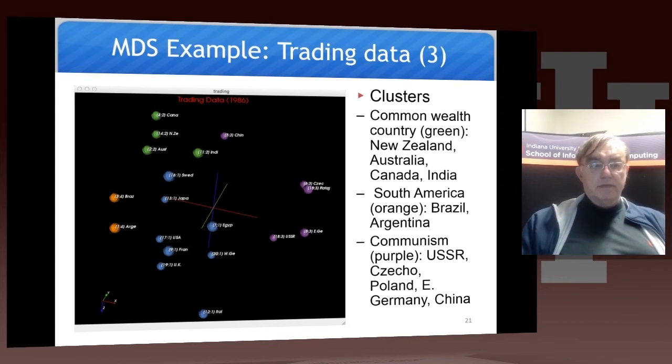And that gives you some plots like this. We have the British Commonwealth in green, so they look as though they have close connections.